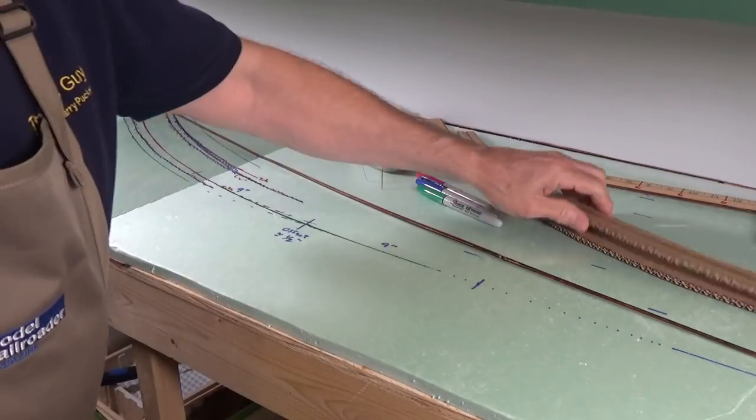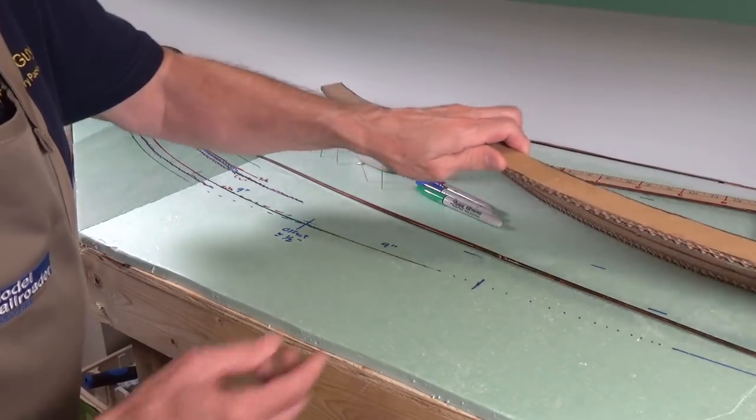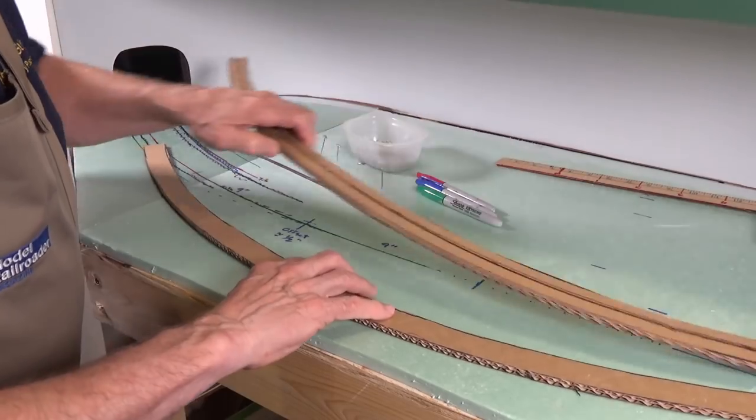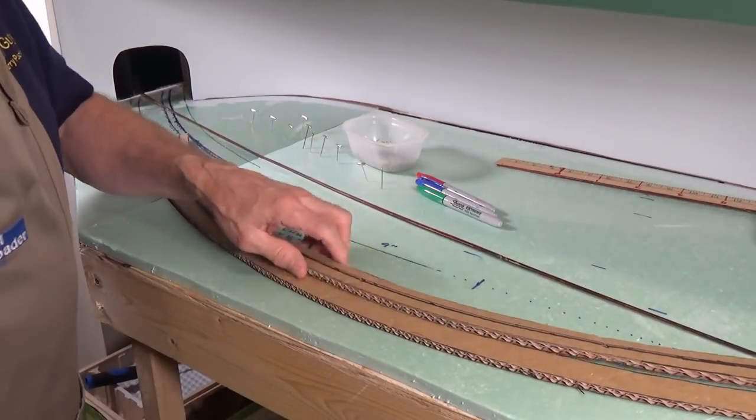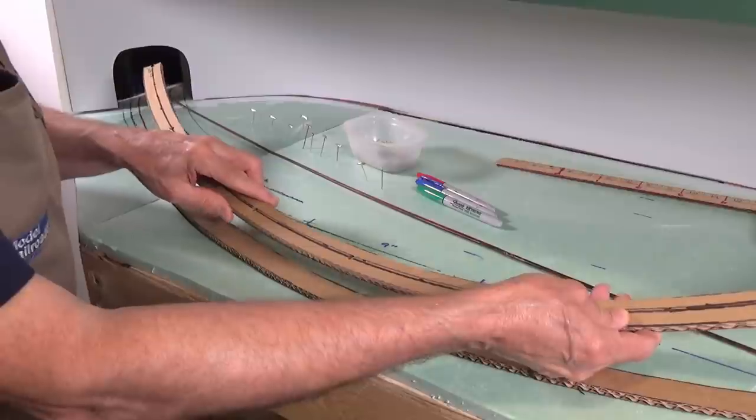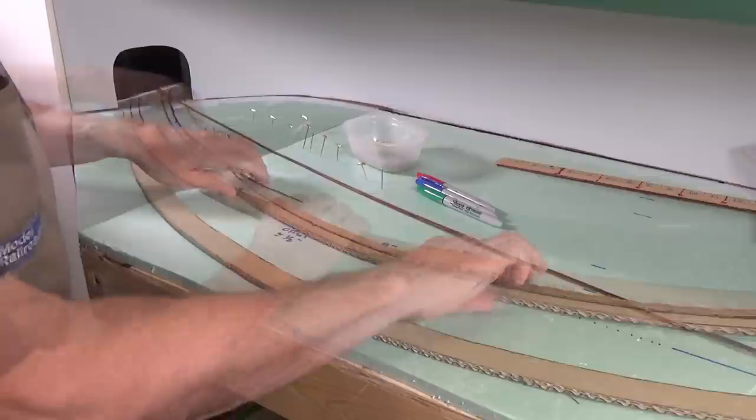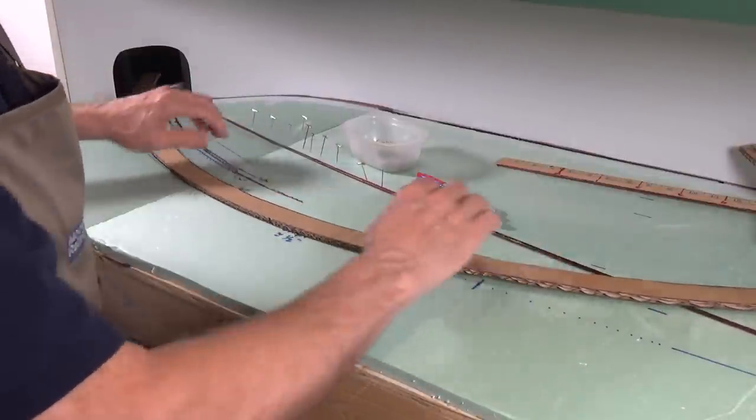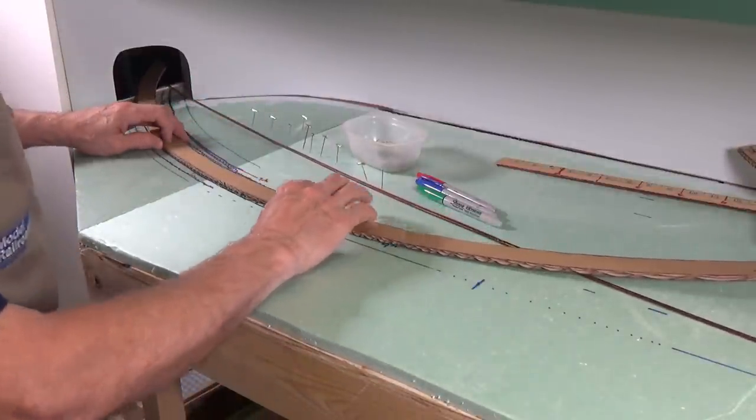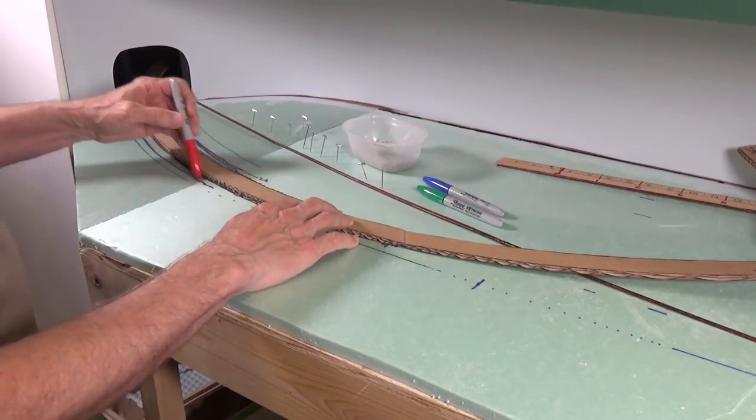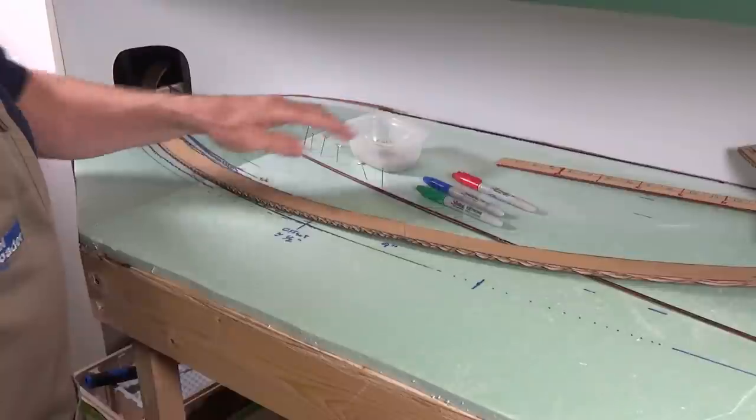Now, what I do is a number of years ago when I was building my last layout, I cut out a couple of these curve templates. This one here is a 30 inch curve. This one here is a 36 inch curve. So when I need to lay out a curve, I can just plop this sucker down here. And with my magic marker, I can lay out the curve. It's very simple that way.